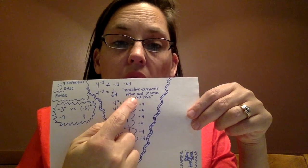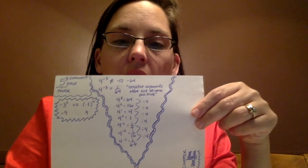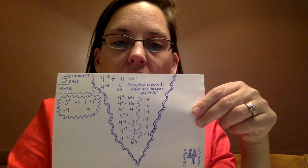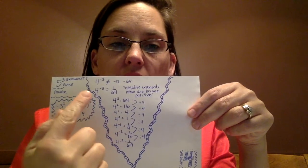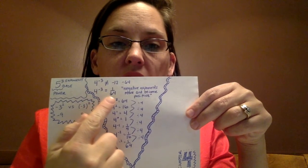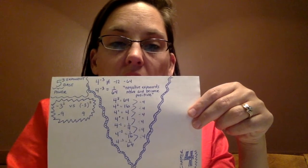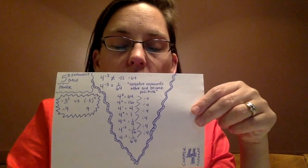Something that you will not see in a textbook, it's just more my wording so that I remember negative exponents move and become positive. And what I mean by that, 4 to the negative 3 moves to the bottom of the denominator, right? And becomes 4 to the positive 3, and 4 to the third power is 64.